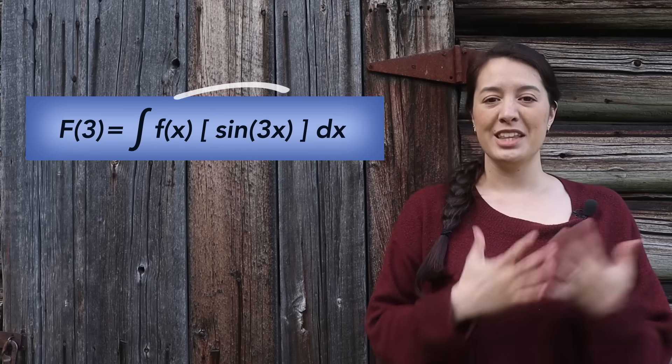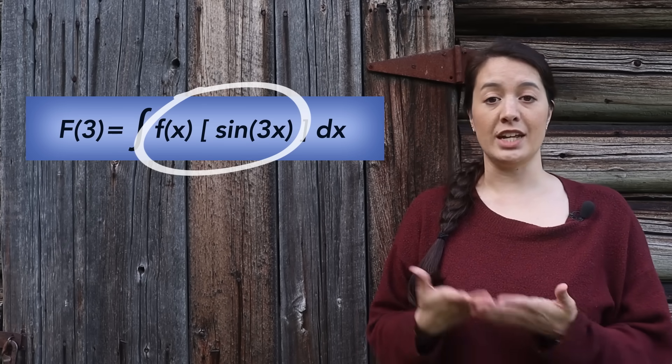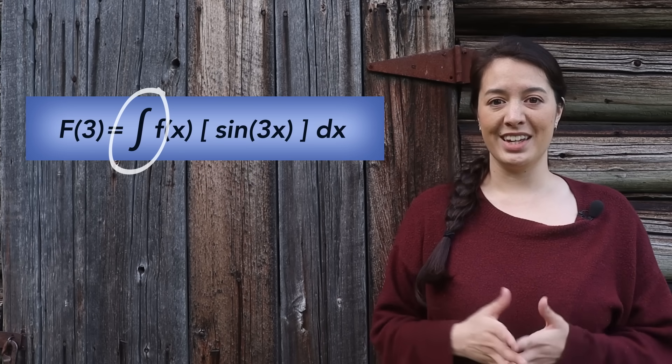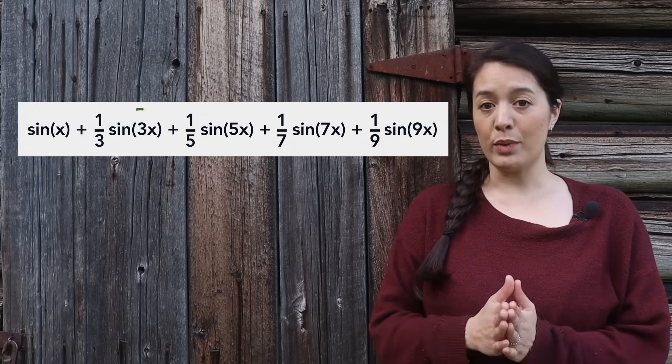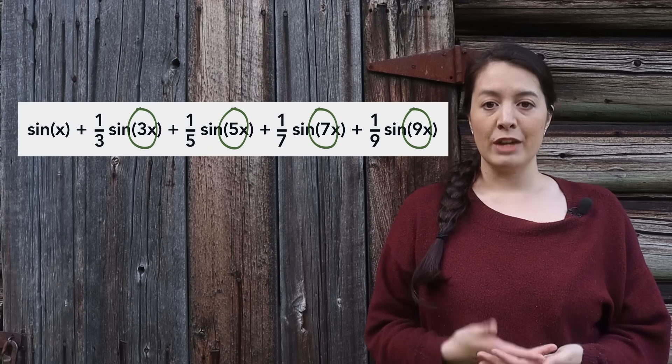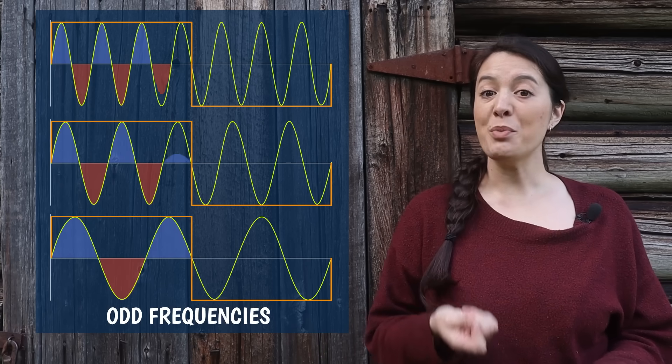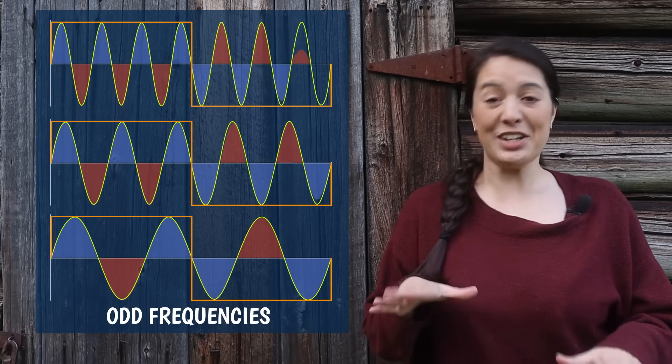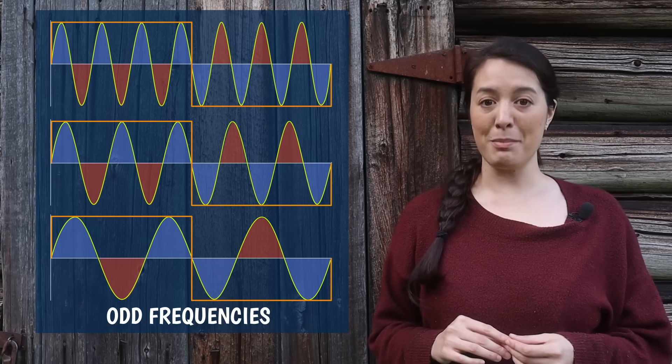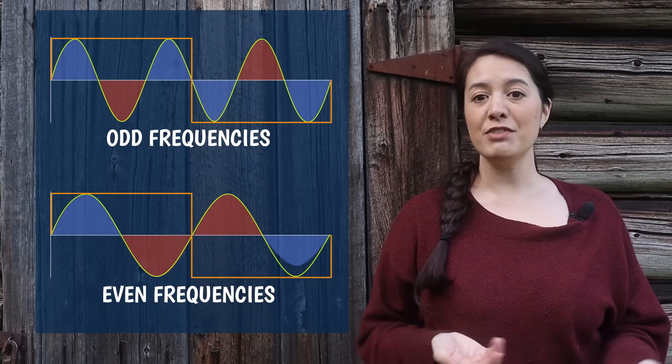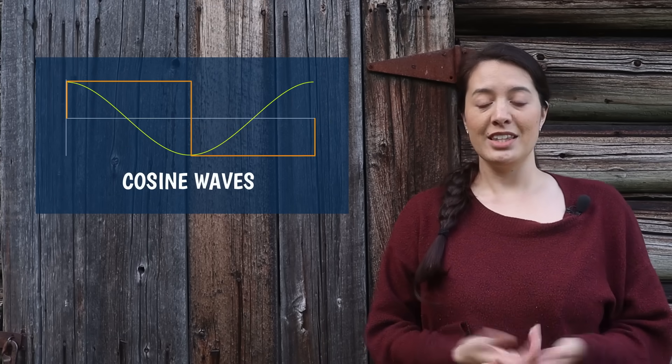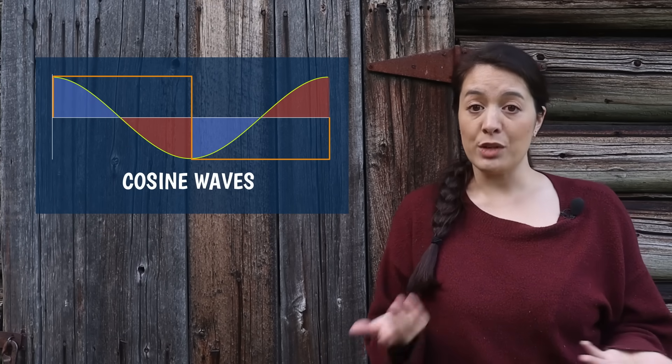So to recap, the multiplication tells us how correlated the waves are at each time step, and the integral tells us how correlated the waves are overall. Now, notice how the square wave is made up of only odd sine terms, and it's pretty easy to see why. For every period of the square wave, there are always two more correlation humps than anti-correlation humps. So the sum will always add to a positive number, whereas with even frequencies, the positive and negative humps exactly cancel out, leaving us with a sum of zero. This is also why we don't see any cosine waves in the series.